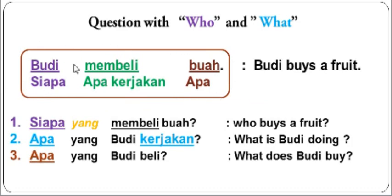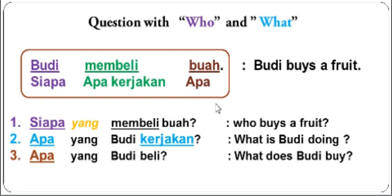Here is the pattern. If the question is 'siapa', the answer can be, for example, 'Puti'. If the question is 'apa' and 'kerjakan', the answer can be 'membeli buah'. And if the question begins with 'apa', the answer can be 'buah'.